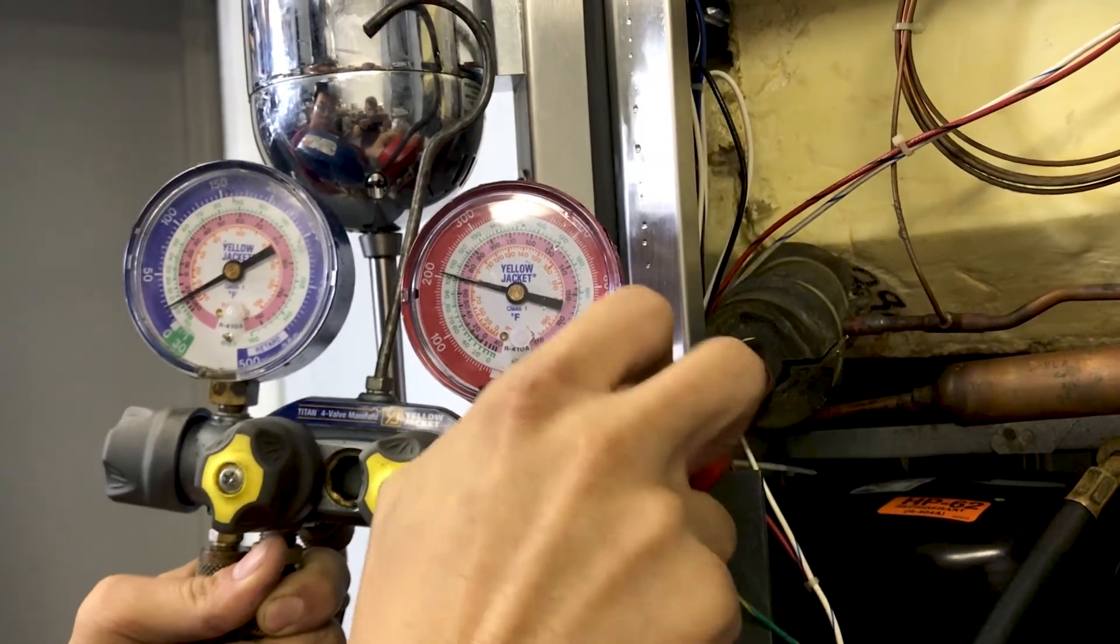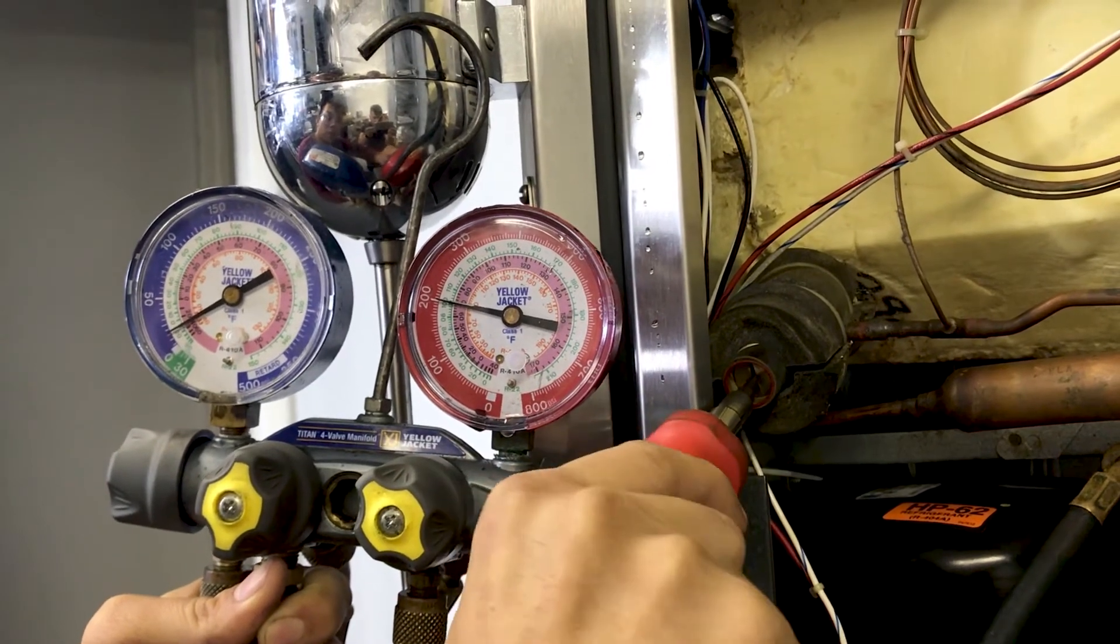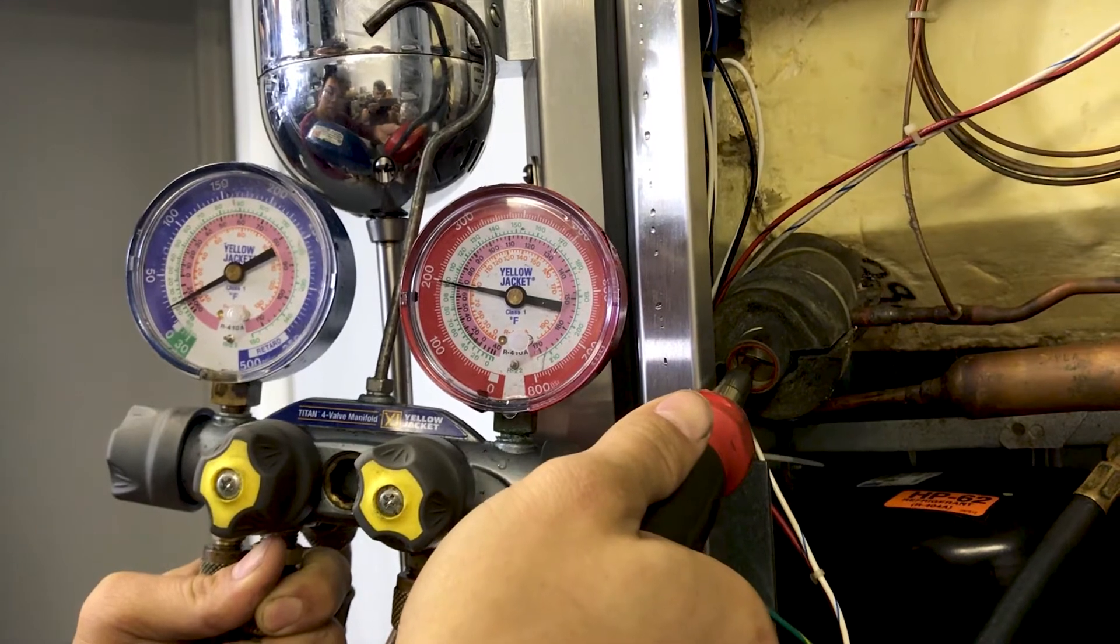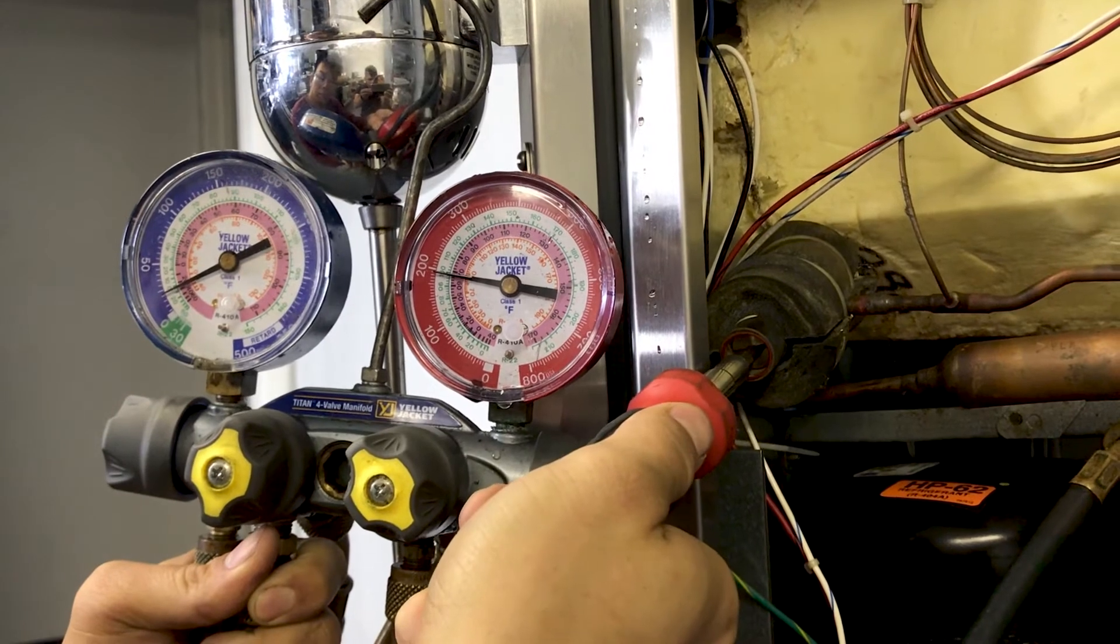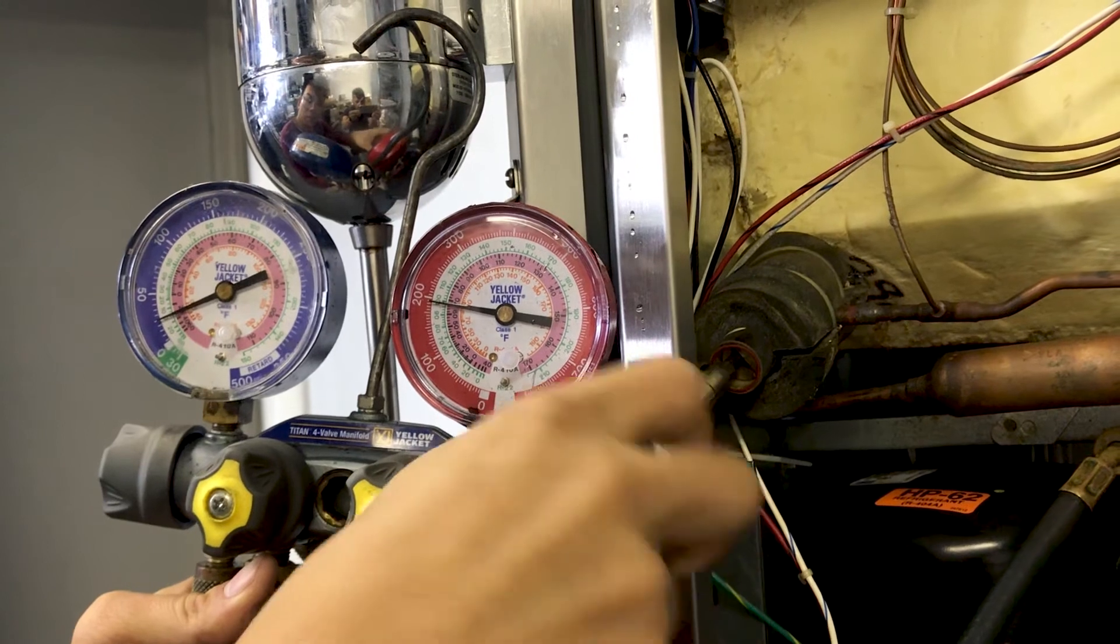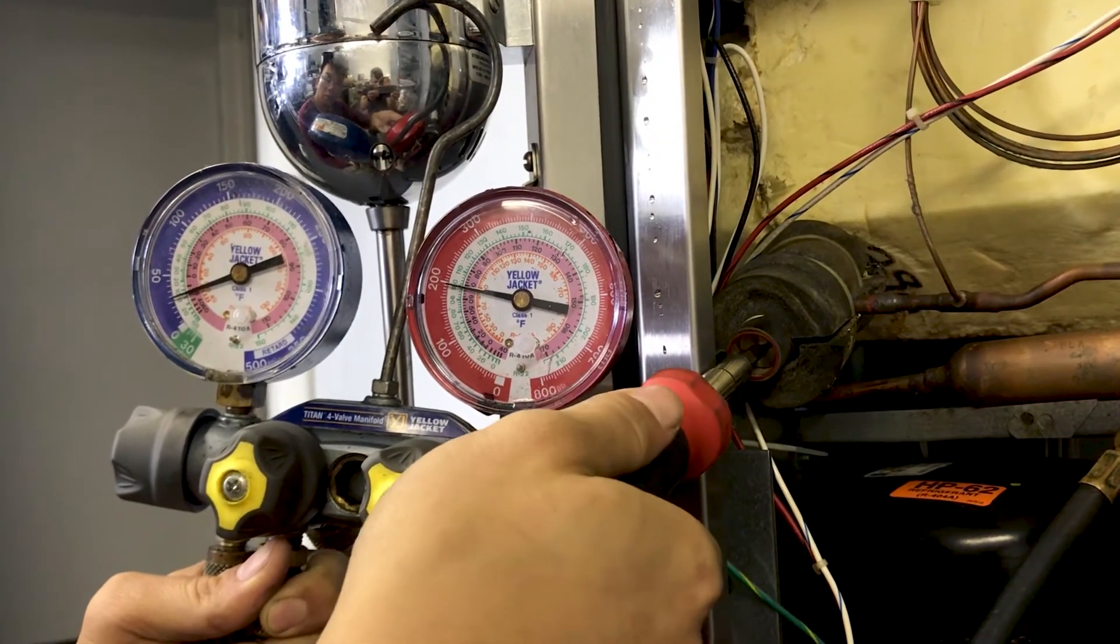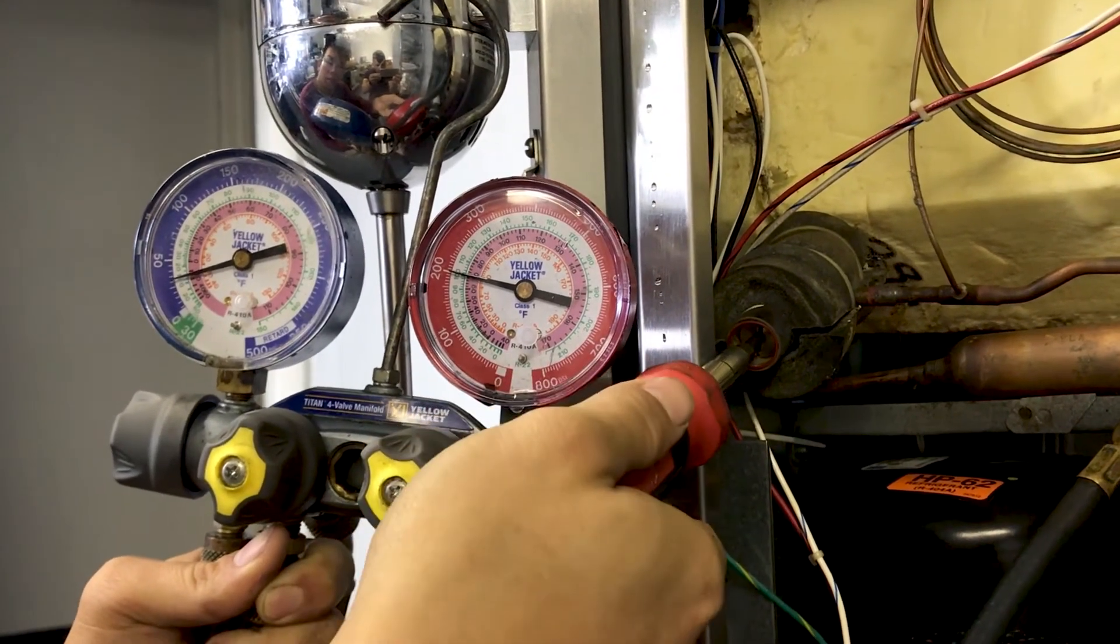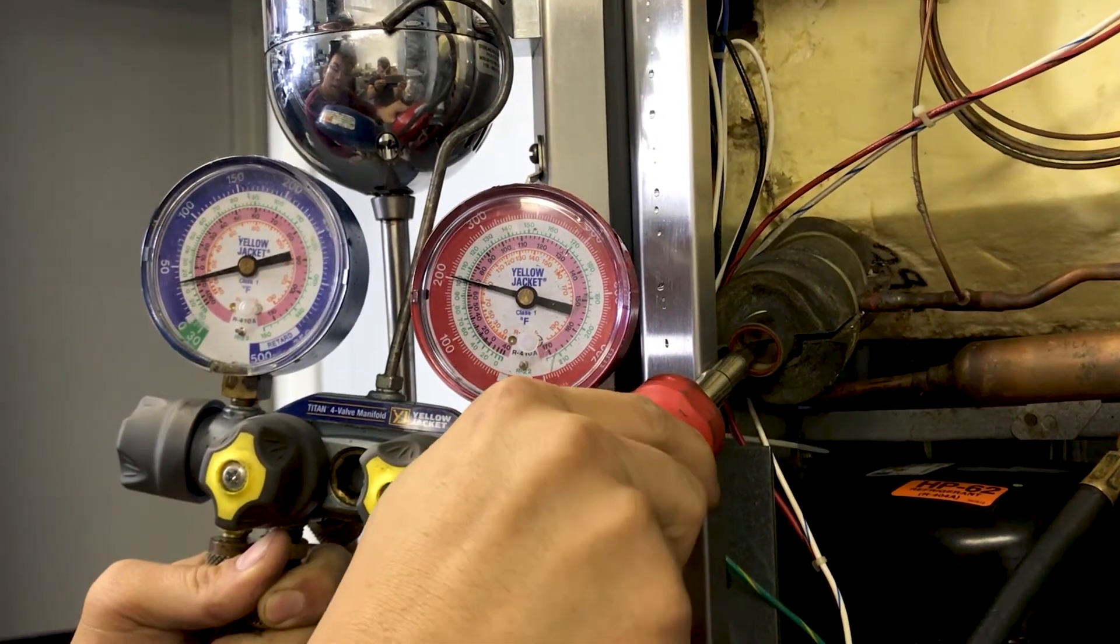So where we want it to be right now is 35, 30 to 35. So we're going to turn this, because it's too low, and turn it up. There we go. A little more. Just going to climb up there.